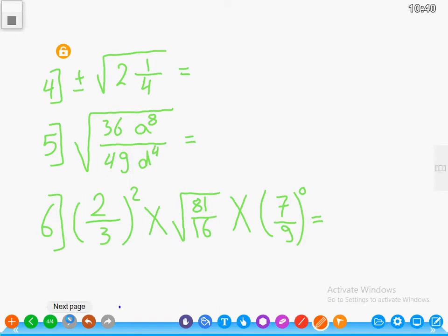Number four: positive or negative root two and a quarter. At the first, we will convert the mixed number to improper fraction. We will put 4 as denominator: 2 times 4 equals 8, 8 plus 1 equals 9. Then we will write positive or negative.